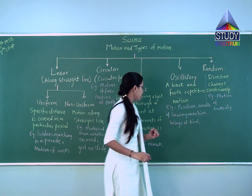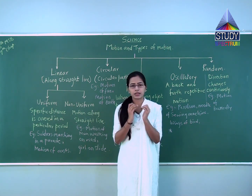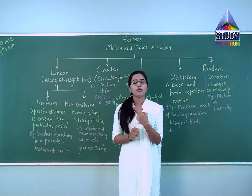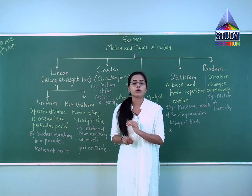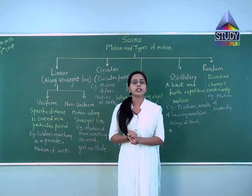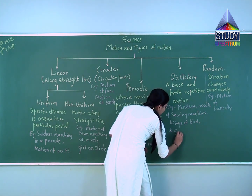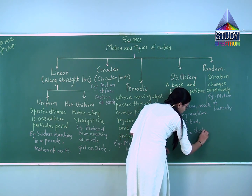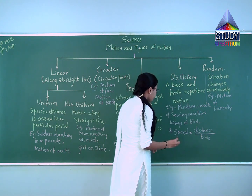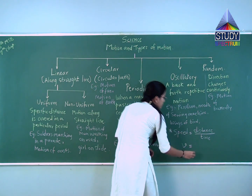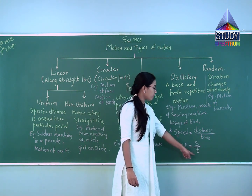Lastly, we have one more topic: finding the speed of an object. Suppose I am walking on a road covering 1 kilometer distance in half an hour — how do we calculate speed? Speed is the distance covered by the object for a particular time, or we can say distance covered by an object for unit time. Unit time can be 1 hour, 1 minute, or 1 second. The formula is: speed equals distance upon time.